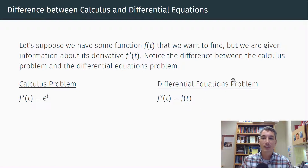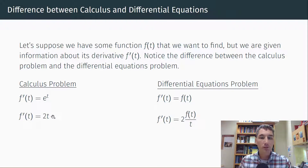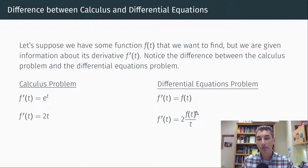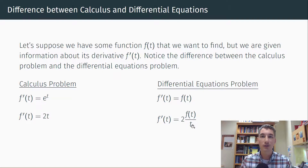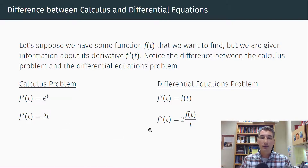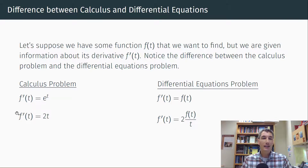Another example: f prime equals 2t — we knew t squared was a solution to that calculus problem. How might that look as a differential equations problem? Well, f prime equals 2 times f of t divided by t. If you take t squared: on the left-hand side, the derivative of t squared is 2t; on the right-hand side, t squared divided by t is t, times 2 is 2t. So t squared solves this differential equations problem as well. In both cases the answer is t squared, but you can see how the problems look differently.